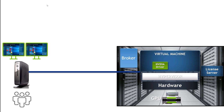When architecting a virtual desktop solution with vGPU, think of it as a pipeline: starting at the GPU, through the virtual machine, through the broker and protocol layers, to the endpoint where pixels are decoded and displayed. Any bottleneck anywhere in this pipeline will affect performance.